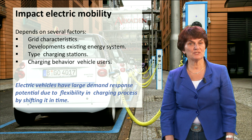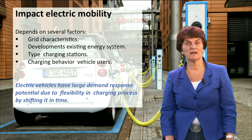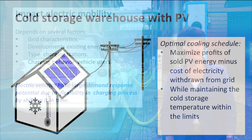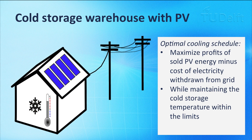Many other types of loads have this ability too. As an example of another type of responsive demand, a cold storage warehouse can be given. A cold storage warehouse is basically a huge refrigerator where goods are stored at very low temperature. Suppose for this illustrative example that the cold store has PV production on the same site and it can withdraw power from the grid and feed it back. In many countries, and presumably even more so in the future, tariffs for consuming are higher than for delivering energy to the grid. The challenge is to find the optimal cooling schedule that minimizes the total cost of cooling by maximizing the profit of solar PV energy minus the cost of electricity withdrawn from the grid while maintaining the cold storage temperature within the limits.